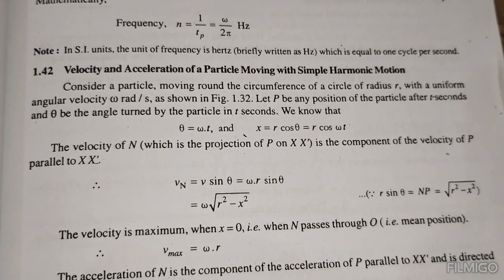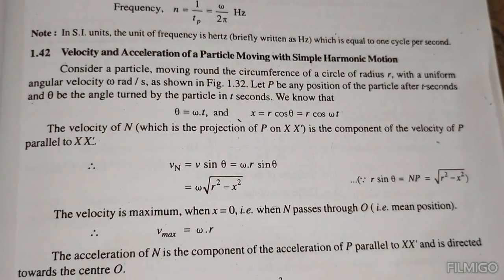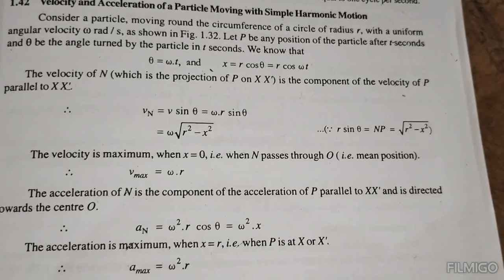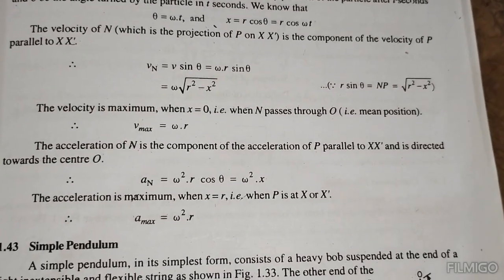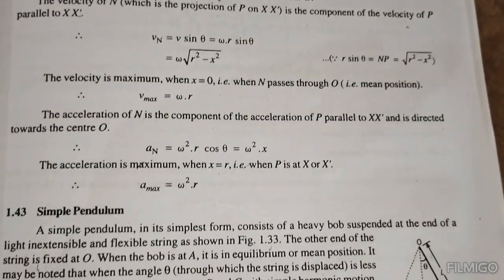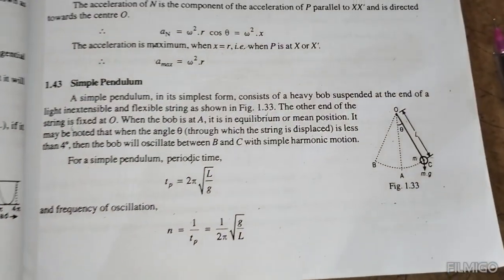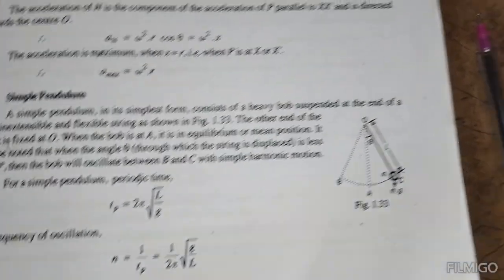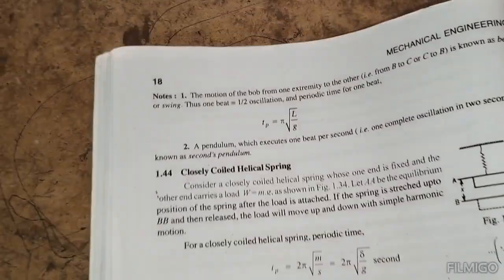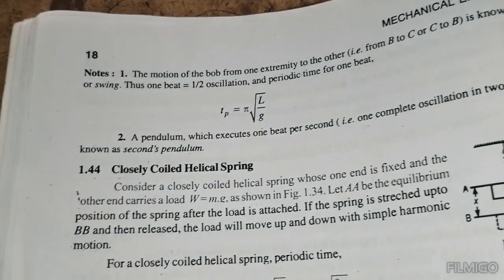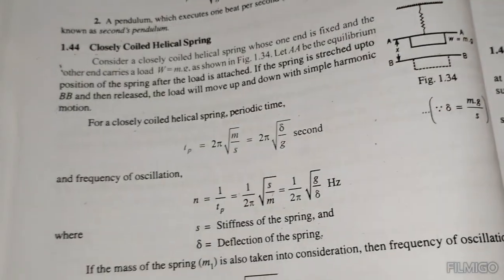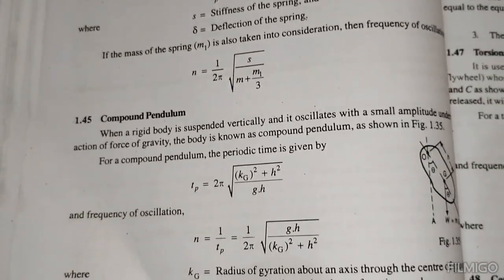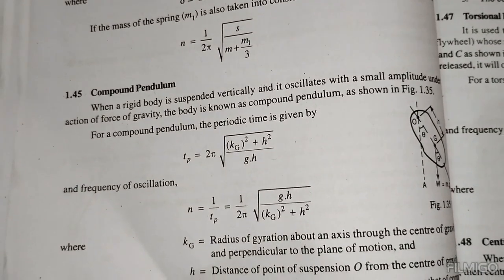For simple harmonic motion: displacement x equals r cos omega t; velocity v equals omega times square root of r squared minus x squared; maximum velocity v_max equals omega r; maximum acceleration a_max equals omega squared r. Time period of a simple pendulum: T equals 2 pi times square root of l divided by g. For a compound pendulum: T equals 2 pi times square root of k squared plus h squared divided by g h.